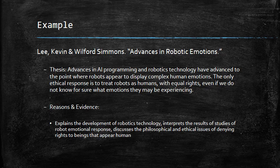Our fourth article, Kevin Lee and Wilford Simmons' 'Advances in Robotic Emotions,' argues that advances in AI programming and robotics technology have reached the point where robots display complex human emotions. Even if we can't know whether they're actually experiencing these emotions, the only ethical response is to treat them as humans — if they appear to behave as humans, we must ethically treat them as humans. Their evidence includes the development history of robotics technology, results of studies of robotic emotional response, and philosophical and ethical issues around equal rights and the display of human emotions.